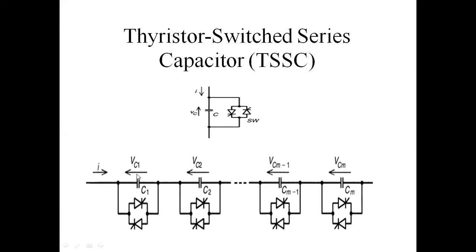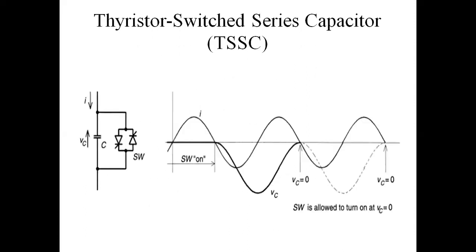When connecting more capacitors in series, the impedance value increases. This is the circuit diagram and waveform for the Thyristor Switched Series Capacitor. IE is the current flowing in the transmission line, and VC is the Voltage Across the Capacitor in the transmission line.